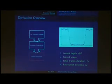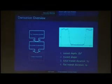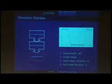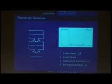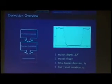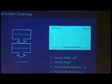Here's what the light curve looks like when we observe it. We can observe the transit depth — how deep this dip is — the overall shape of the transit, the total transit duration from here to here, and the flat transit duration from here to here.